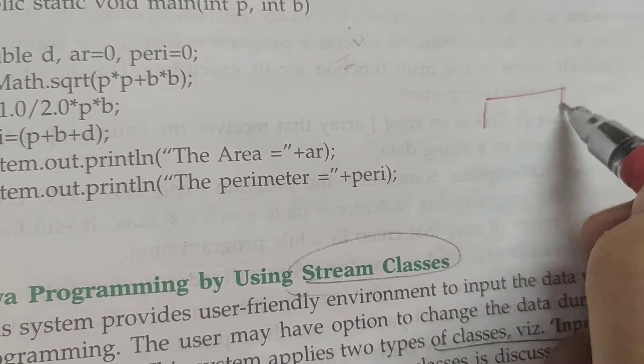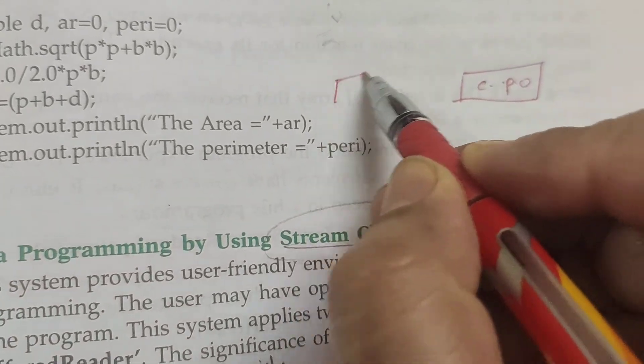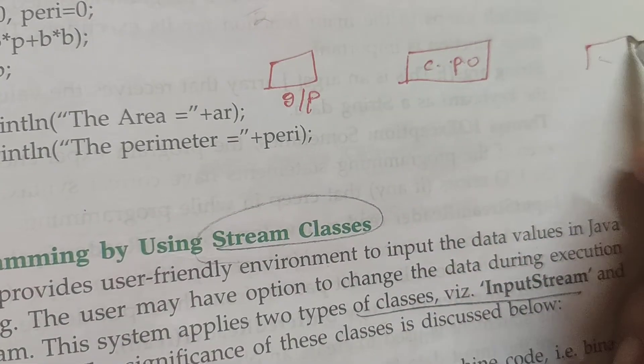You can see, suppose this is your CPU. CPU. This is your input here. Input. What is your output? Here process, here input, CPU, output.